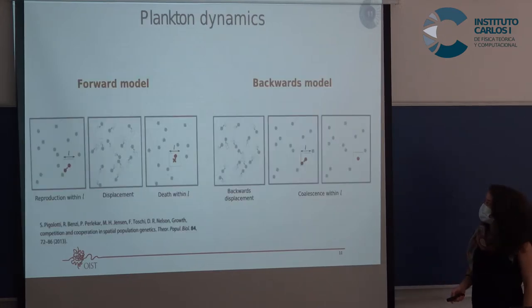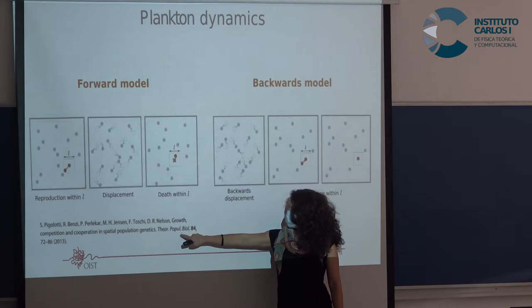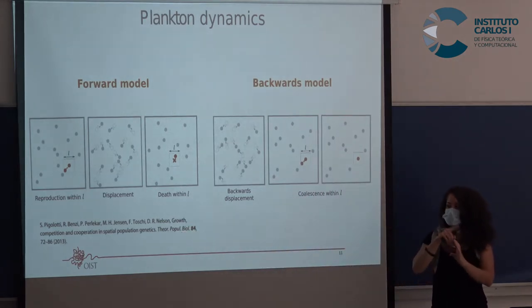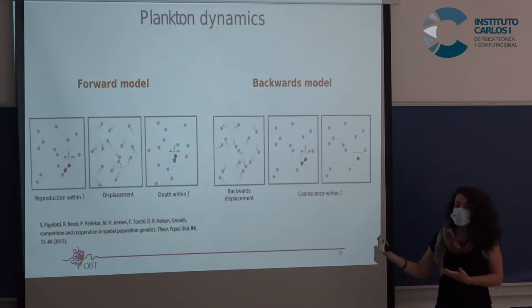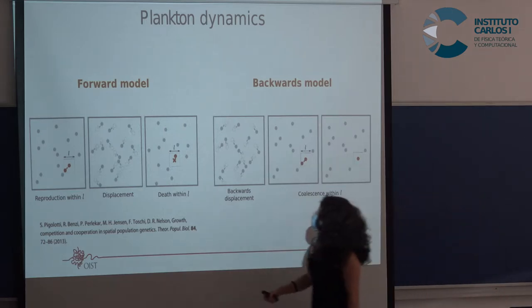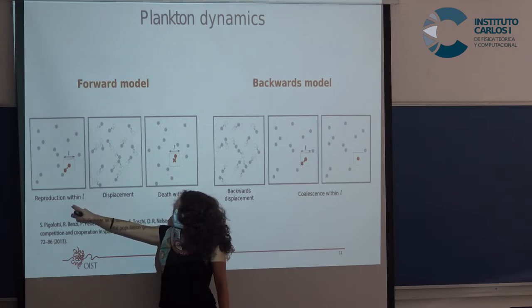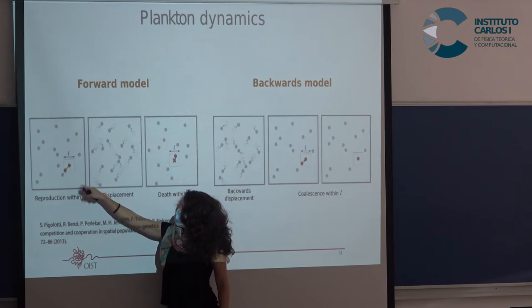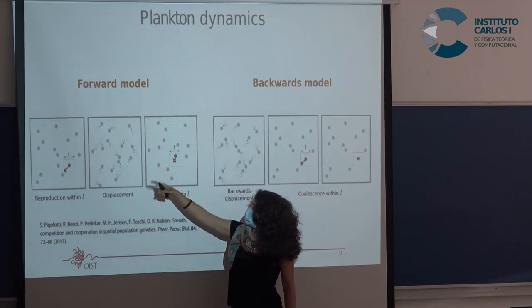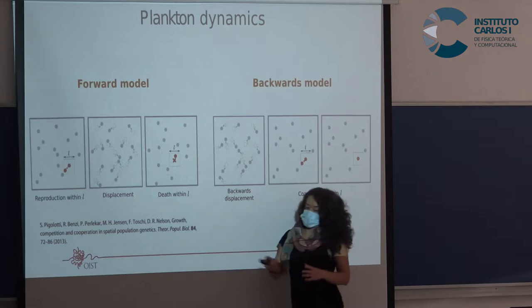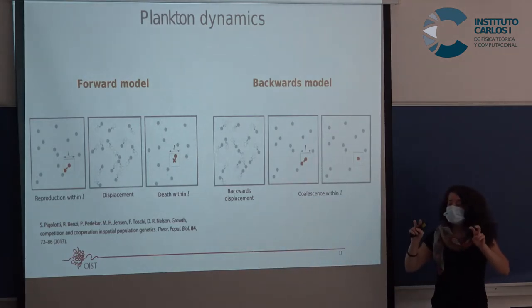This is our main model for the population dynamics, based on neutral theory. Unlike the usual lattice model that simplifies everything, we use continuous space, which is what we need for our fluxes. We call it the forward model because it runs forward in time. Basically, a random individual reproduces in some neighborhood of size l, individuals diffuse, and then die by competition with others, so on average you always have one particle per neighborhood.